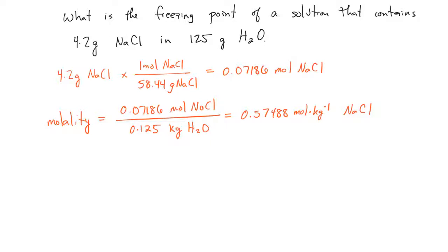When I go to calculate the freezing point depression, I'm going to use the formula ΔTf equals i times Kf times the molality, where i is the van't Hoff factor. For sodium chloride, the van't Hoff factor was 1.9, so I'm going to plug all these numbers in: 1.9 times 1.86 times 0.57488. My freezing point depression will be 2.03°C.